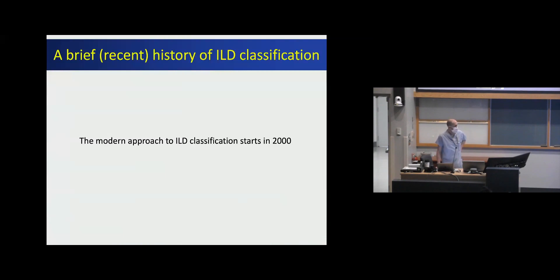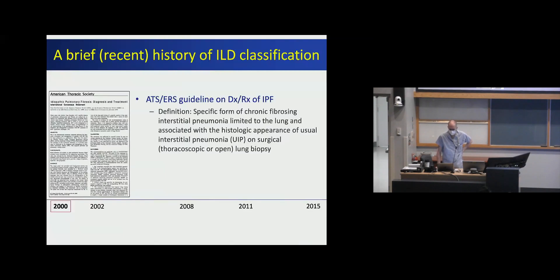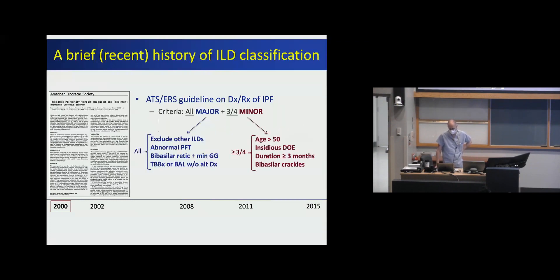For those of you that have been around for a couple of decades, ILD classification really starts in 2000, when there was an ATS-ERS guideline on the diagnosis and treatment of IPF. This was focused on IPF specifically, defined as a specific form of chronic fibrosing interstitial pneumonia, limited to the lungs, and associated with a UIP pattern on surgical lung biopsy. That initial guideline had major and minor criteria for the diagnosis of IPF — you had to have all major and three out of four minor criteria — which has since been completely abandoned.